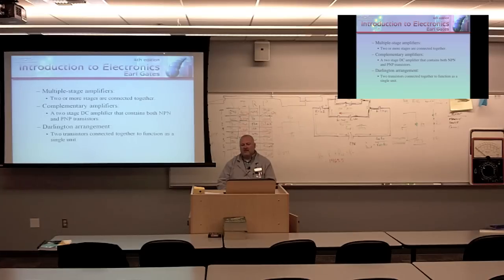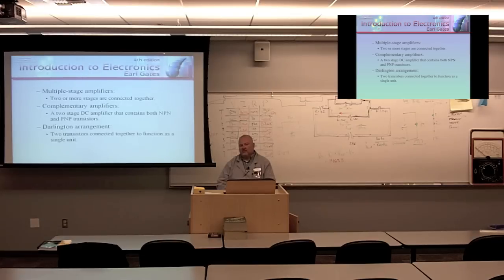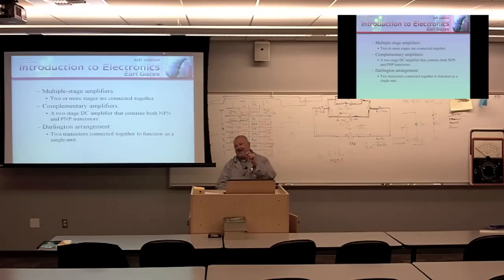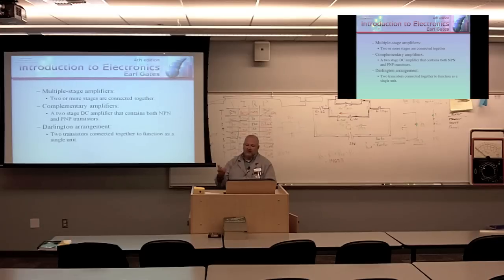Another type is the Darlington Arrangement or Darlington Pair, where two transistors are connected together to function as a single unit. Some of these transistors only have three leads, and it's not until you look at the data sheet that you realize it's a Darlington Pair transistor. I remember working on a television set and finding one of these — it was a single transistor can with two transistors inside in a Darlington Pair arrangement.